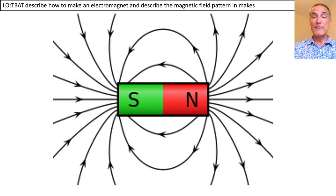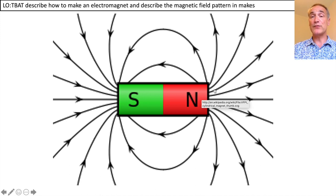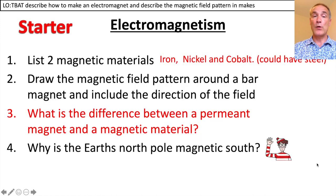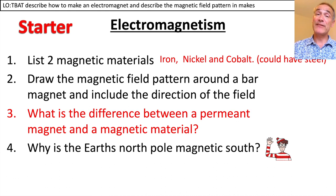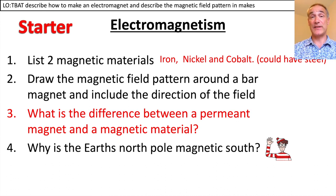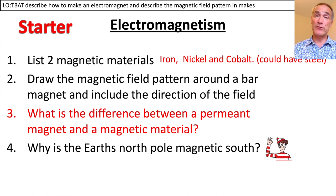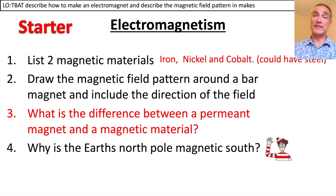Magnetic fields run by a magnet come out of the north and into the south. A permanent magnet always has a magnetic field, whereas a magnetic material only has a magnetic field when you put a magnet onto it, so it induces magnetism into it.